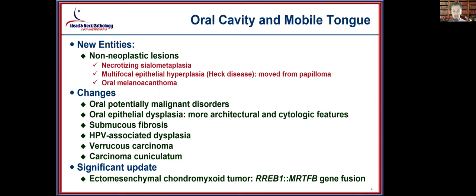Additionally, submucosal fibrosis, HPV-associated dysplasia, verrucous carcinoma, and carcinoma cuniculatum all had significant changes for this edition. There was also an update for ectomesenchymal chondromyxoid tumor, specifically relating to the now-recognized gene fusion.